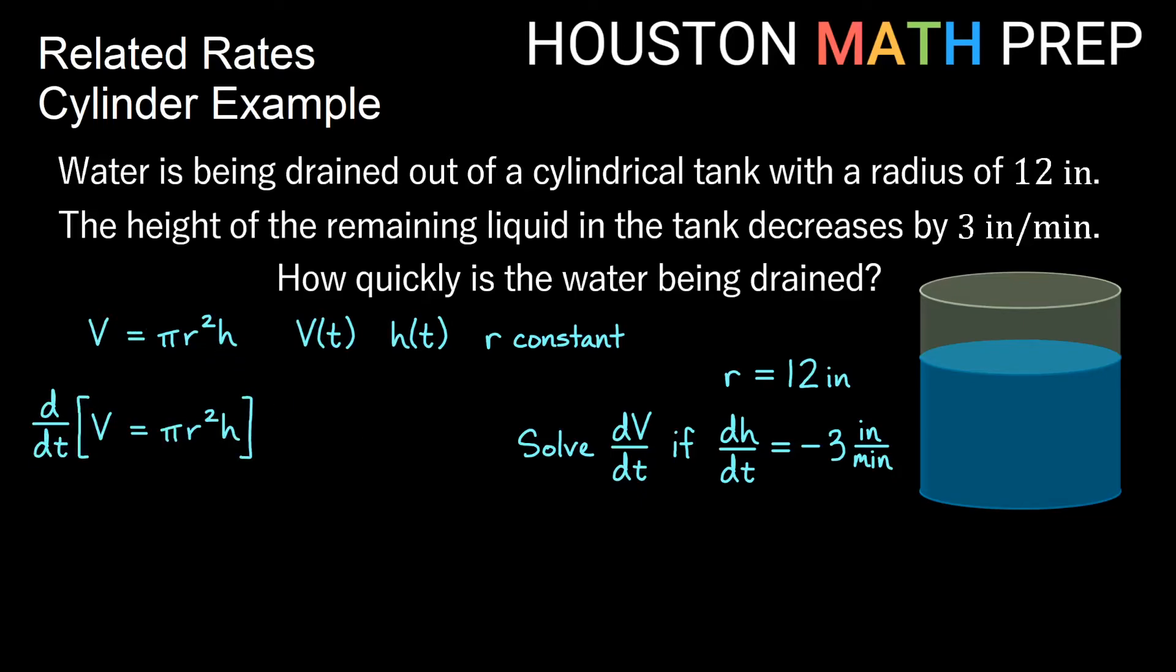So we'll take derivative with respect to time of this equation. Derivative of V on the left side will give us dV/dt. Now remember pi and r squared, these are all constants because r is a constant and pi is also a constant always. So when we take the derivative of pi r squared h, we will get pi r squared, but the chain rule says times the derivative of h will give us times dh/dt. So this is our derivative of this formula with respect to time.